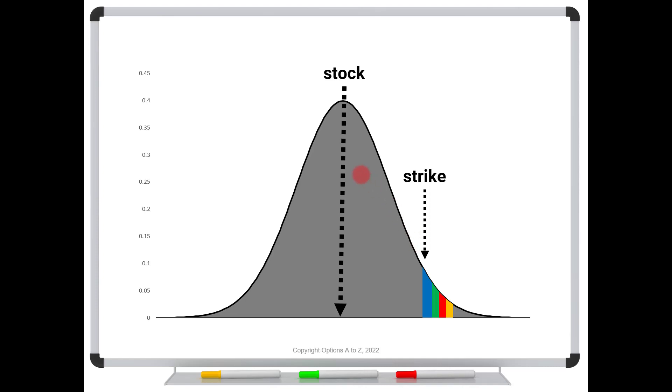But notice what happens if you have an at-the-money option. Stock price is near the center here. Take a look at the height of these bars. See, whether the stock price moves up or down a little bit, the height of these bars is really about the same. So that's showing you that your gamma isn't real sensitive when you have at-the-money options.